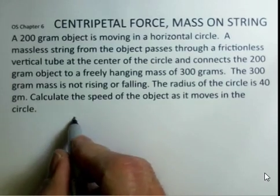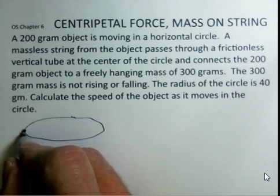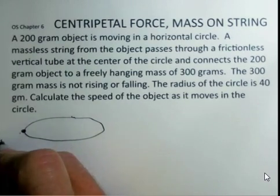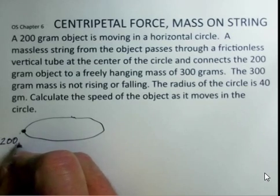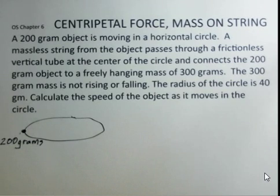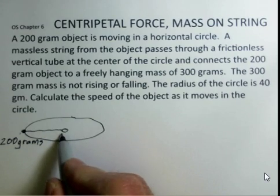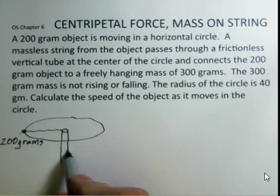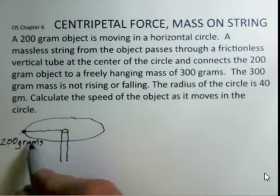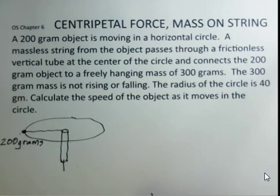I'll try to give a little sketch of what's going on here. So that's a circle, and out here at some point we have a 200 gram object, and it's connected by a massless string. In the center we've got a vertical tube, so this tube is going straight down. The circle is horizontal, and the string comes out of the tube and at the end of the string we have 300 grams.